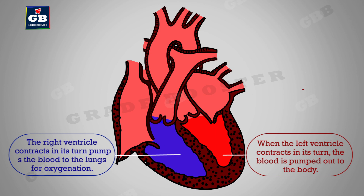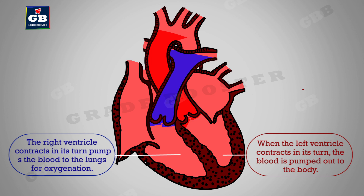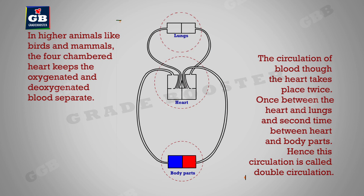When the left ventricle contracts, the blood is pumped out to the body. The right ventricle then contracts and pumps the blood to the lungs for oxygenation. In higher animals like birds and mammals, the four-chambered heart keeps the oxygenated and deoxygenated blood separate.